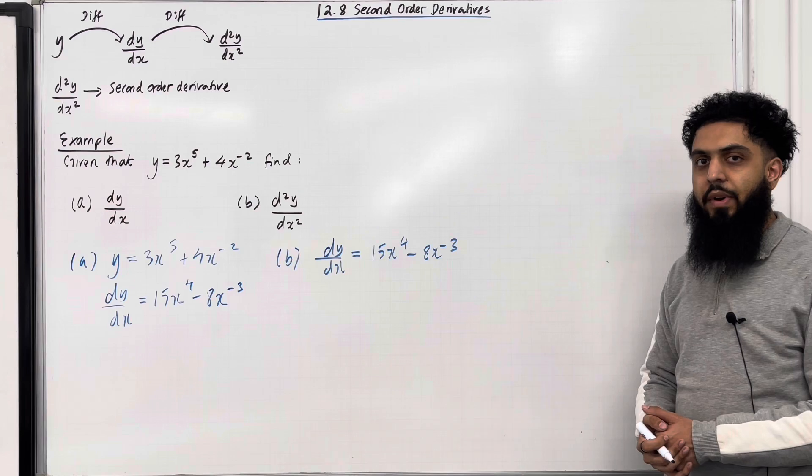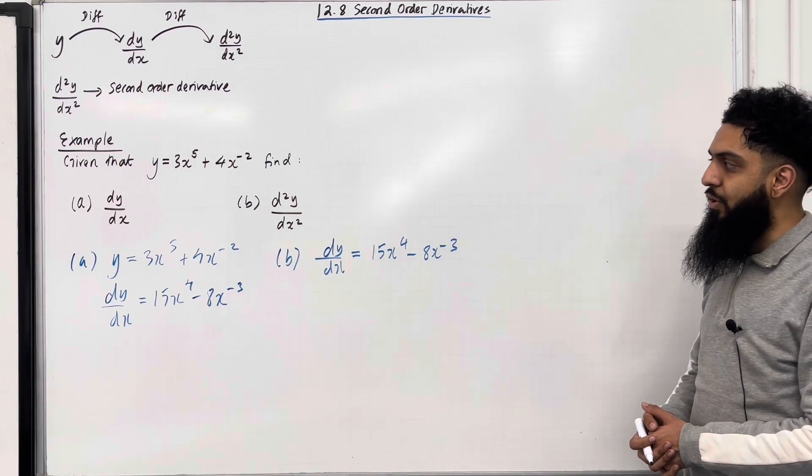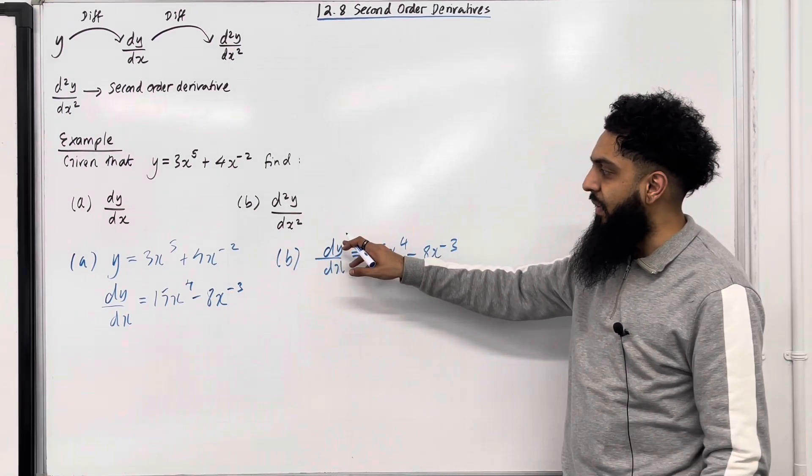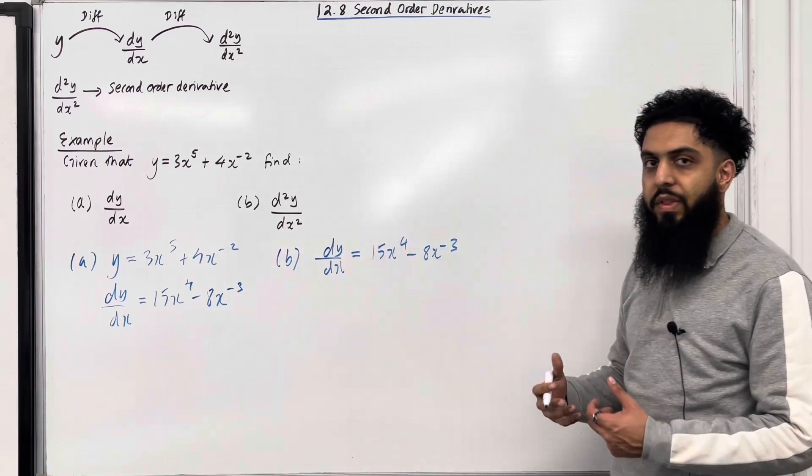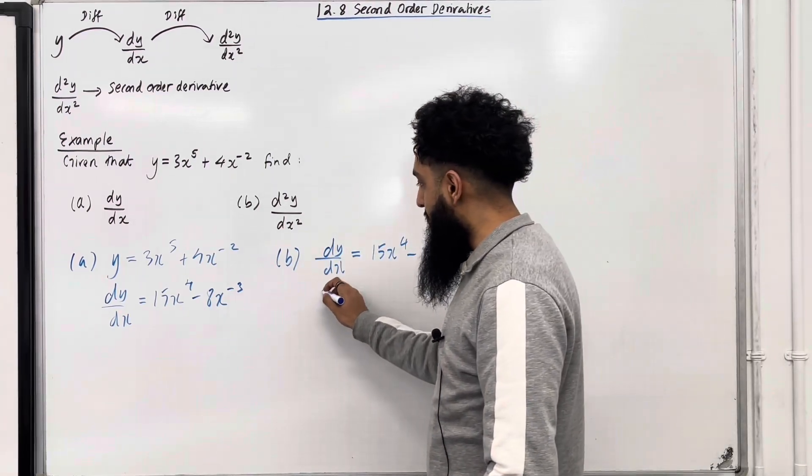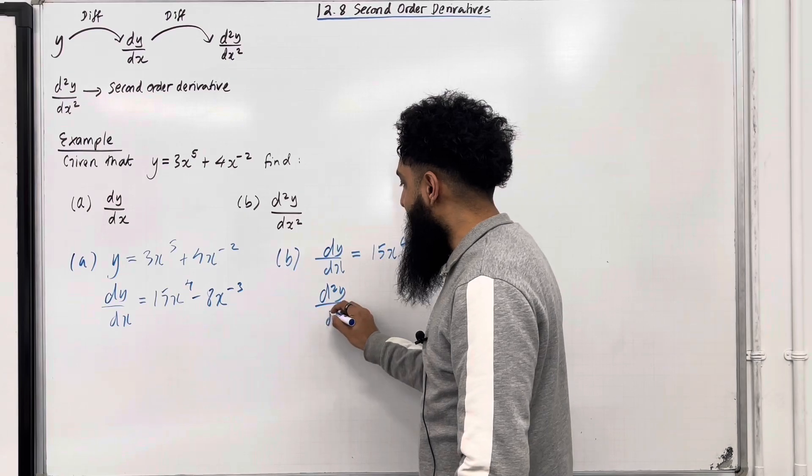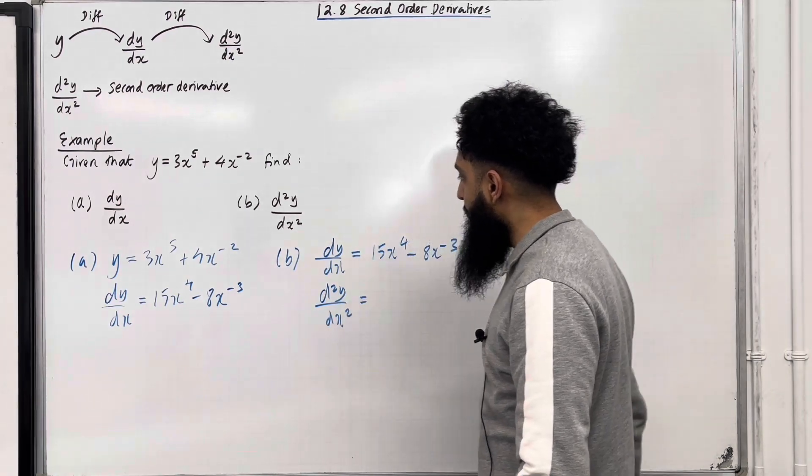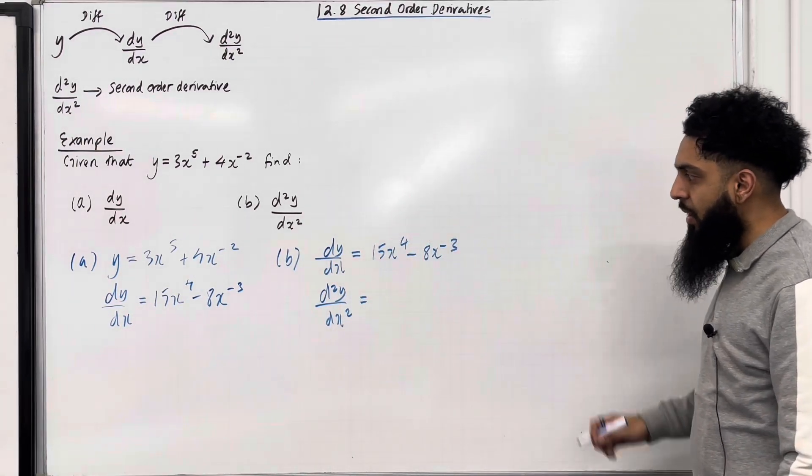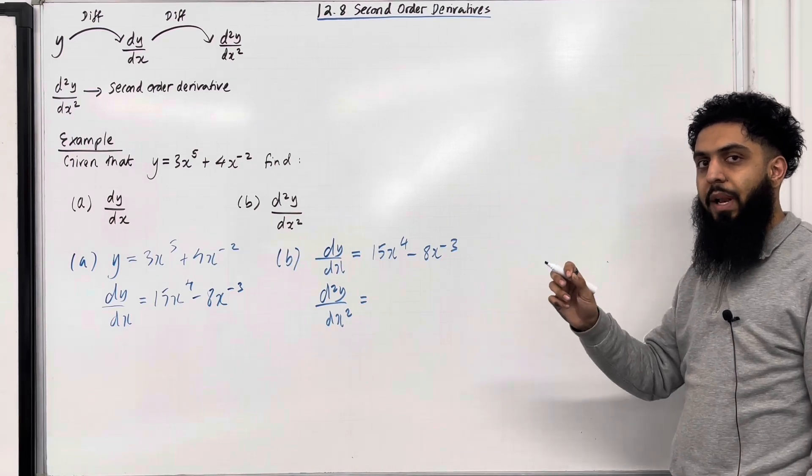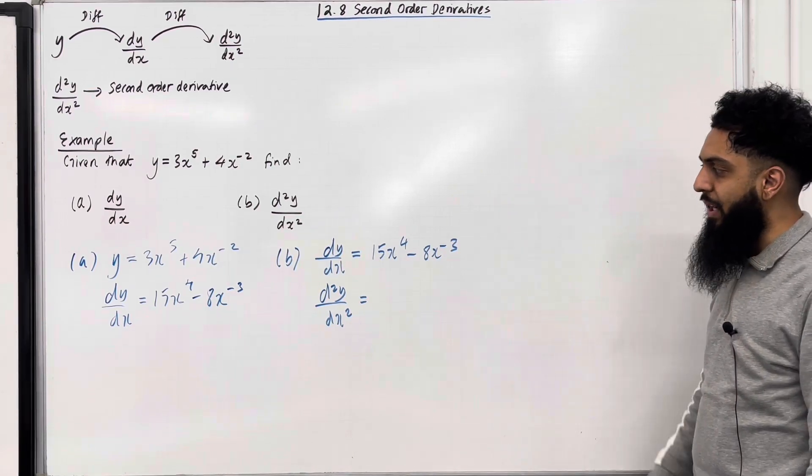To work out the second derivative, d²y over dx², I need to differentiate the first derivative, dy over dx, with respect to x. So I've got d²y over dx² is equal to term by term differentiation. Bring down the power, multiply by the coefficient, and then subtract 1 from the power.